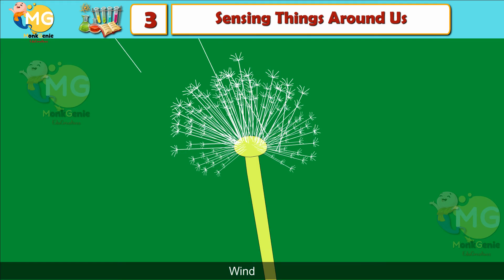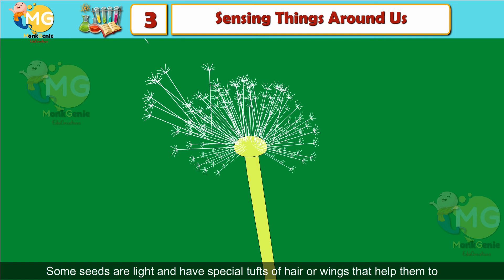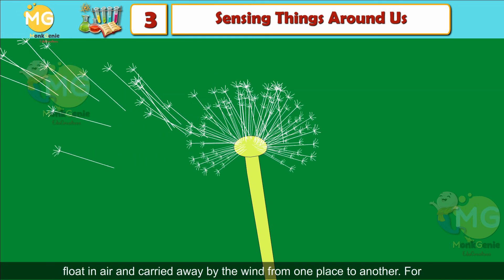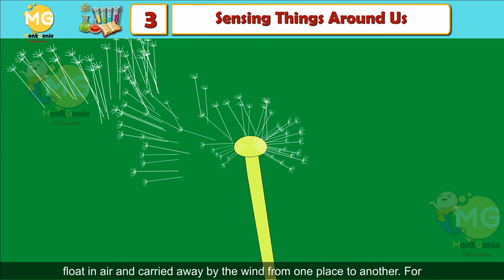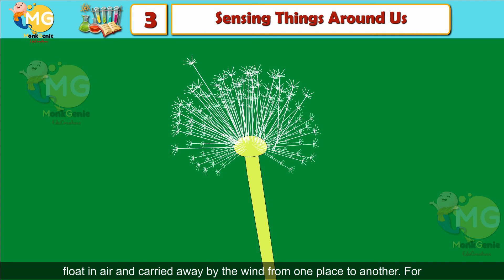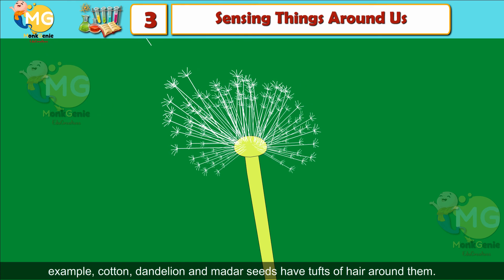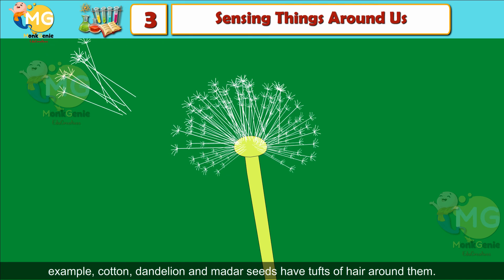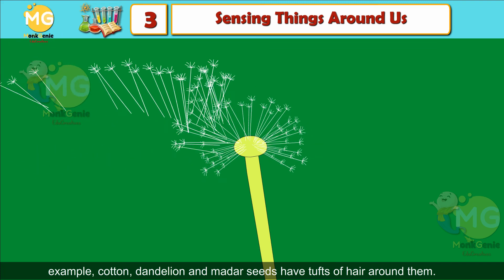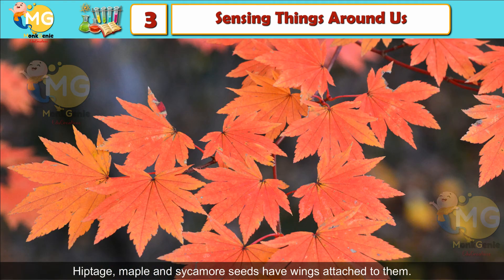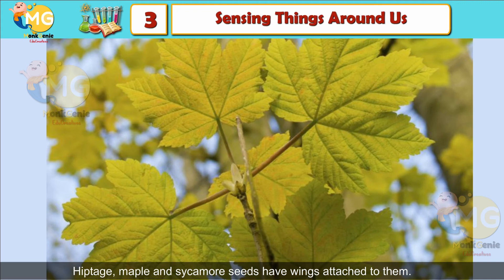Wind: some seeds are light and have special tufts of hair or wings that help them float in air and get carried away by the wind from one place to another. For example, cotton, dandelion, and madar seeds have tufts of hair around them. Maple and sycamore trees have wings attached to their seeds.